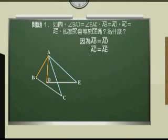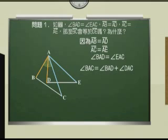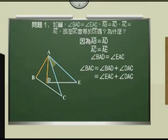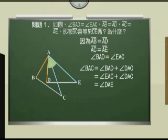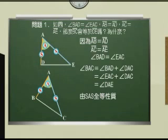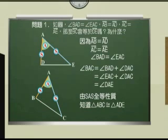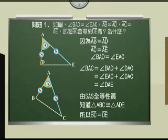而且角BAD等于角EAC，角BAC等于角BAD加角DAC，角EAC等于角EAD加角DAC，由SAS全等性质，得到三角形ABC全等于三角形ADE，所以线段BC等于线段DE。